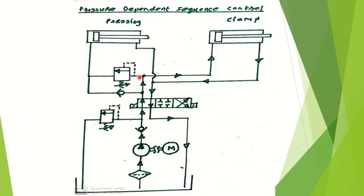At port A, the check valve prevents flow from right to left, so fluid cannot pass in that direction. The sequence valve is set at 50 bar — meaning up to 50 bar, all flow is directed toward the clamping cylinder. As fluid enters the dead end of the clamping cylinder, the piston moves forward. The oil from the other side of the cylinder connects to the reservoir via the direction control valve.